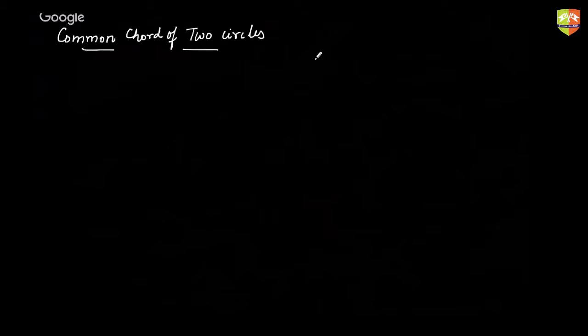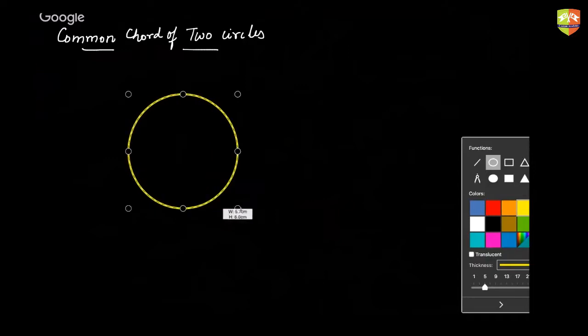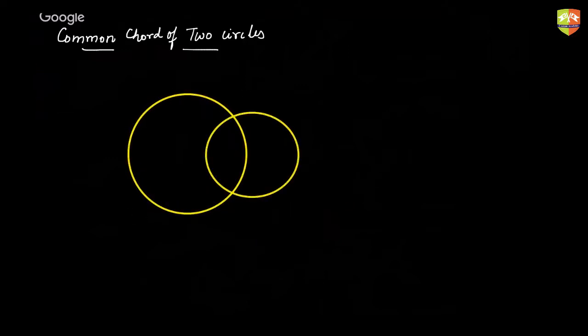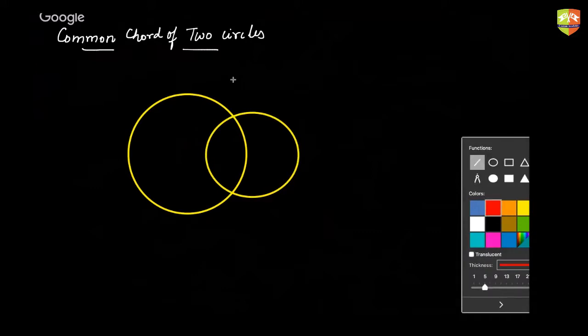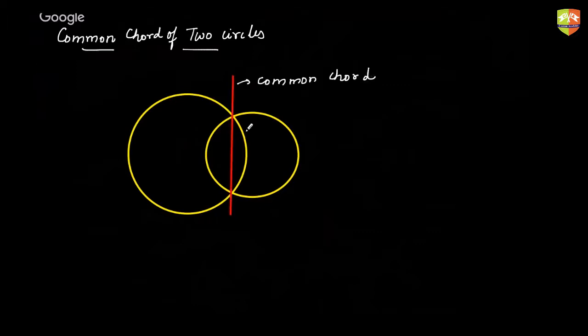Next is the concept of the equation of common chord of two circles. If you have two circles which intersect, this line is called the common chord. You can treat this common chord as a circle of infinite radius passing through the meeting point of two circles. Let me call these circles as S equal to 0 and S dash equal to 0.